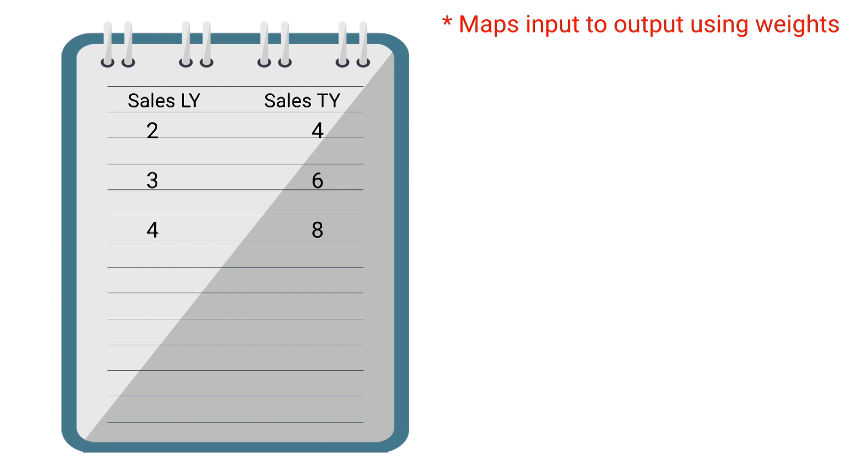Neural networks go about doing this by using something called weights. So for this training data, our neural network would end up calculating a weight of 2. So 2 times our weight of 2 equals 4. When it gets new data, say 8, it would multiply that by 2 and predict sales this year of 16. Let's go ahead and take a deeper look at how neural networks actually go about accomplishing this.